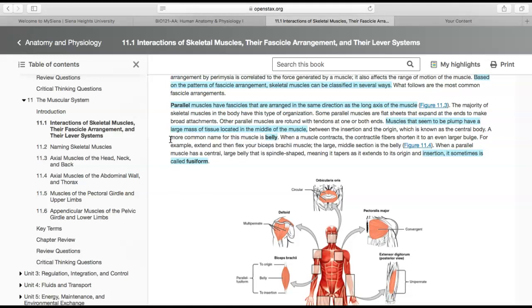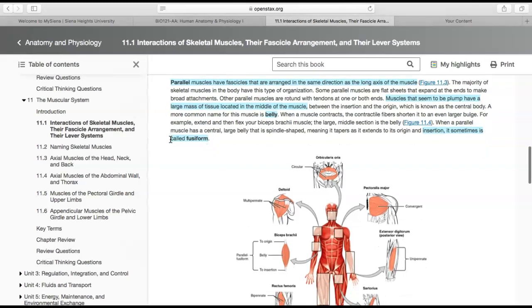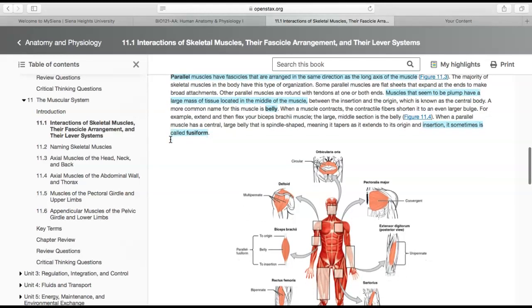Some parallel muscles might be flat sheets that expand at the ends and make broad attachments, while others are rotund with tendons on both ends. Sometimes you'll see muscles that seem plump and have a large mass of tissue located in the middle between the insertion and origin. That's called the central body, but the common term is the belly.